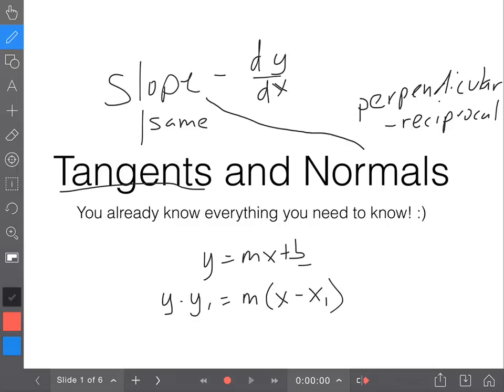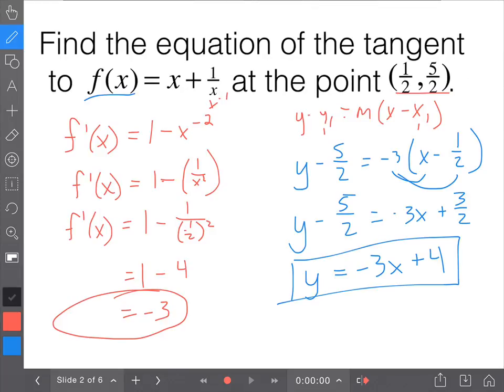That's because normals are going to do exactly the same thing as the tangents, except you do the perpendicular, the negative reciprocal for the slope. Everything else, all the other procedures that we've done so far, will be exactly the same.